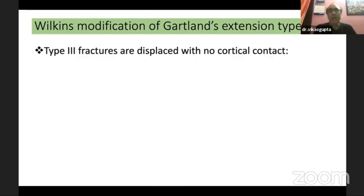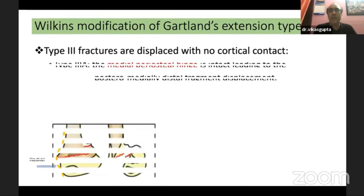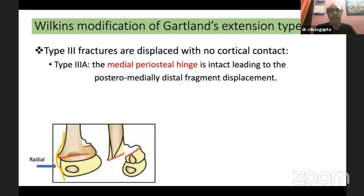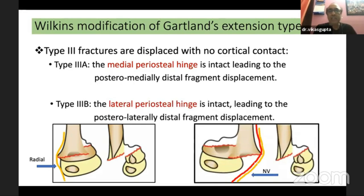Type 3 fractures are completely displaced with no cortical contact. They are further subclassified as type 3A, where the distal fragment displaces posteromedially with an intact posteromedial hinge, and type 3B with lateral periosteal hinge intact due to posterolateral displacement. In posteromedial displacement, the radial nerve is at risk; in posterolateral displacement, the neurovascular bundle is at stretch or at risk.